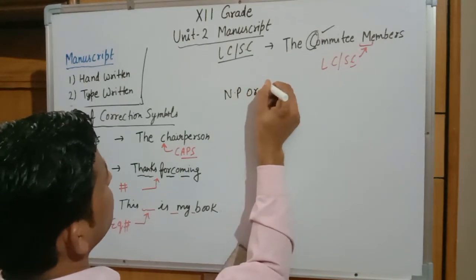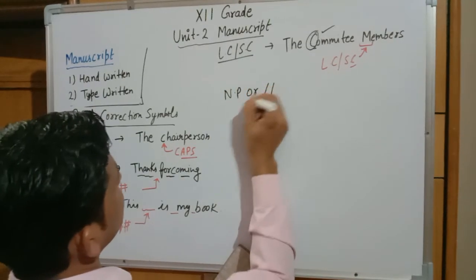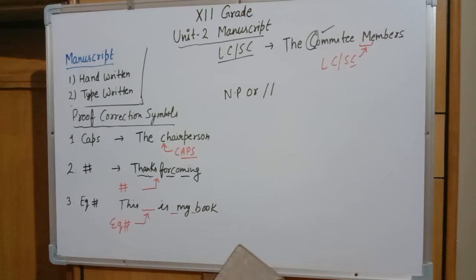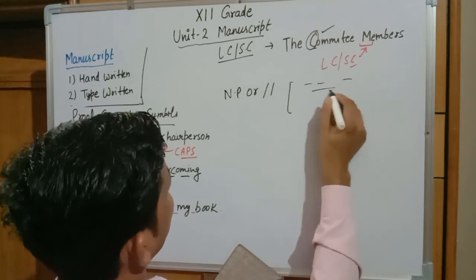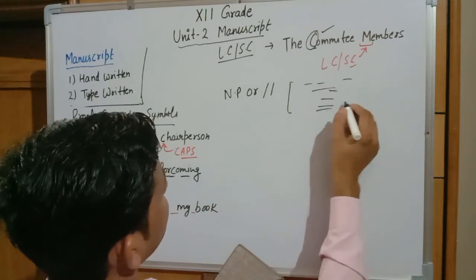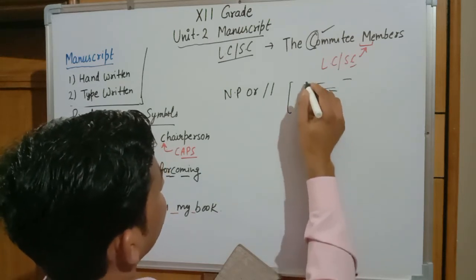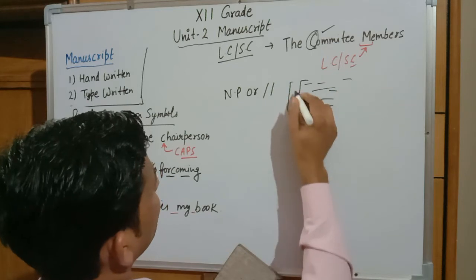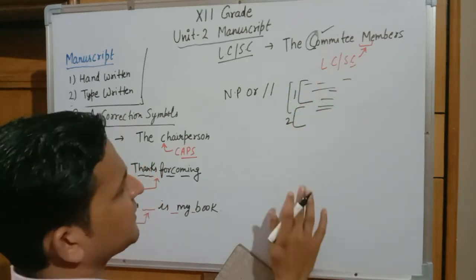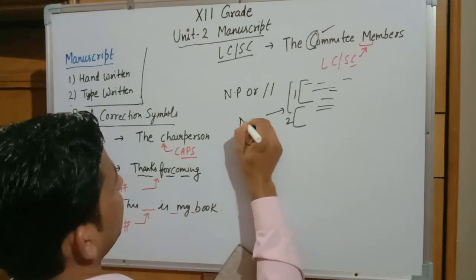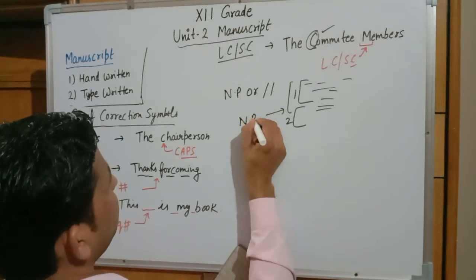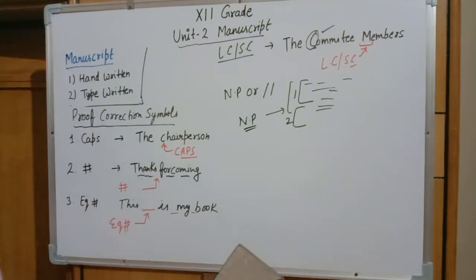The next sign is NP, or double slash. NP stands for New Paragraph. If we have written content continuously without creating separate paragraphs for separate content, we use NP to indicate where a new paragraph should begin. Both NP and the double slash sign can be used for this purpose.